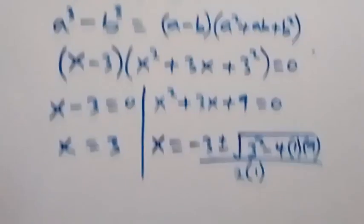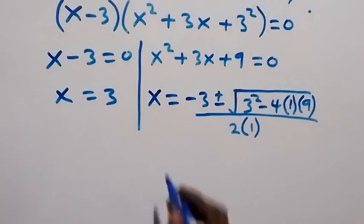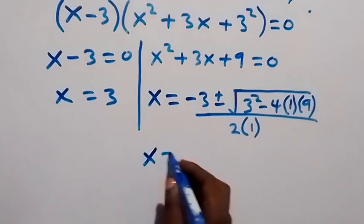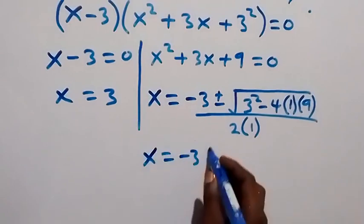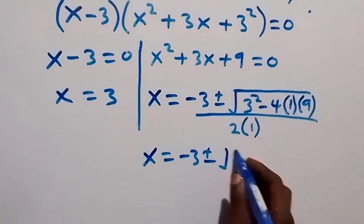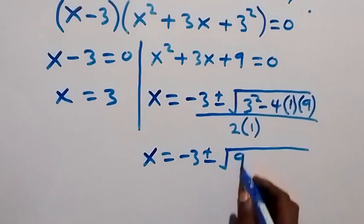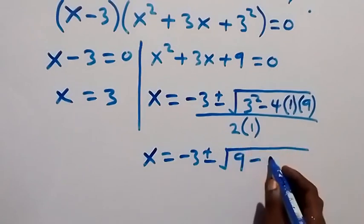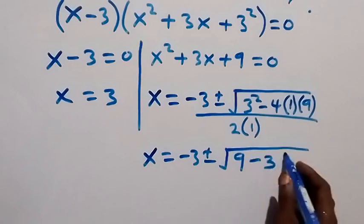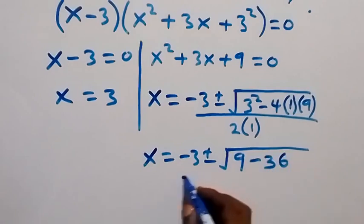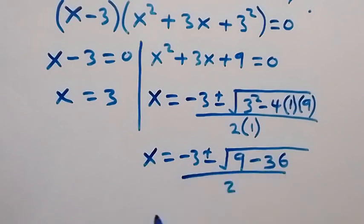Then from here we simplify, and this will be x = -3 ± √(9 - 36), 4 times 9 is 36, over 2.